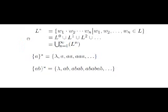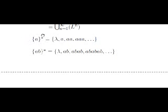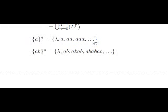Let's see an example. Consider the language containing only the word A and apply the star operation. By choosing 0 words from the language, we obtain the empty word. By choosing 1 word, we obtain A. By choosing 2 words, since both have to be A, we obtain AA. By proceeding in this way, one can see that the result of the star operation in this case is the language containing all the possible words that can be built of A.